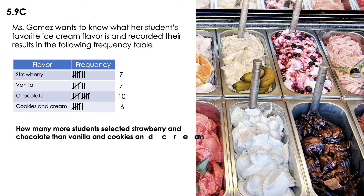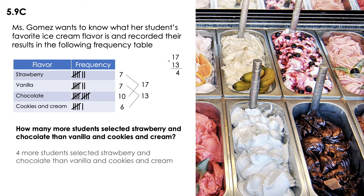How many more students selected strawberry and chocolate than vanilla and cookies and cream? First I have to add strawberry and chocolate together, then add vanilla and cookies and cream together, and find the difference between them. Strawberry and chocolate total 17. Vanilla and cookies and cream total 13. The difference is 4. So 4 more students selected strawberry and chocolate than vanilla and cookies and cream.